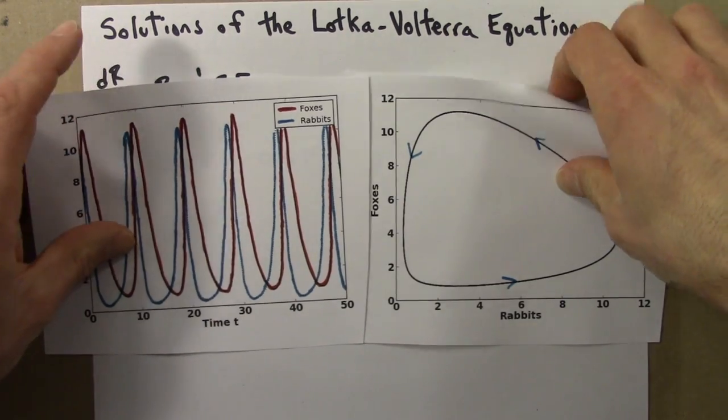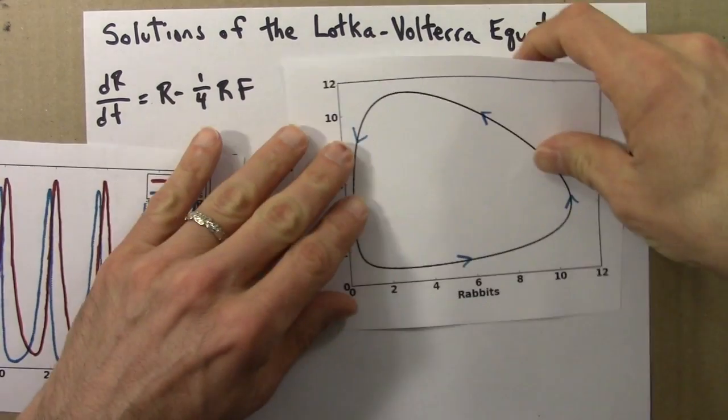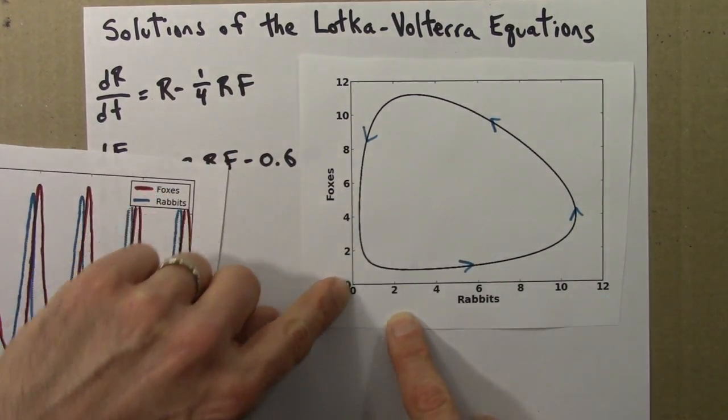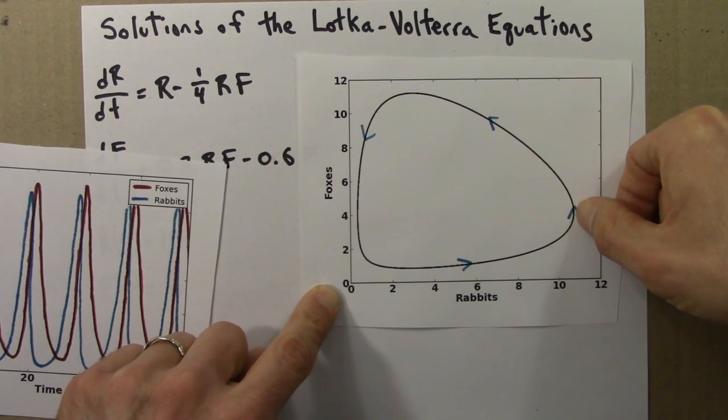It won't look quite the same because the scales are different, but if I wanted to look at the rabbits, I'll keep it this way. The rabbits go down to a little bit less than 1 and their maximum value is a little bit less than 11. So rabbits are always between these two values.